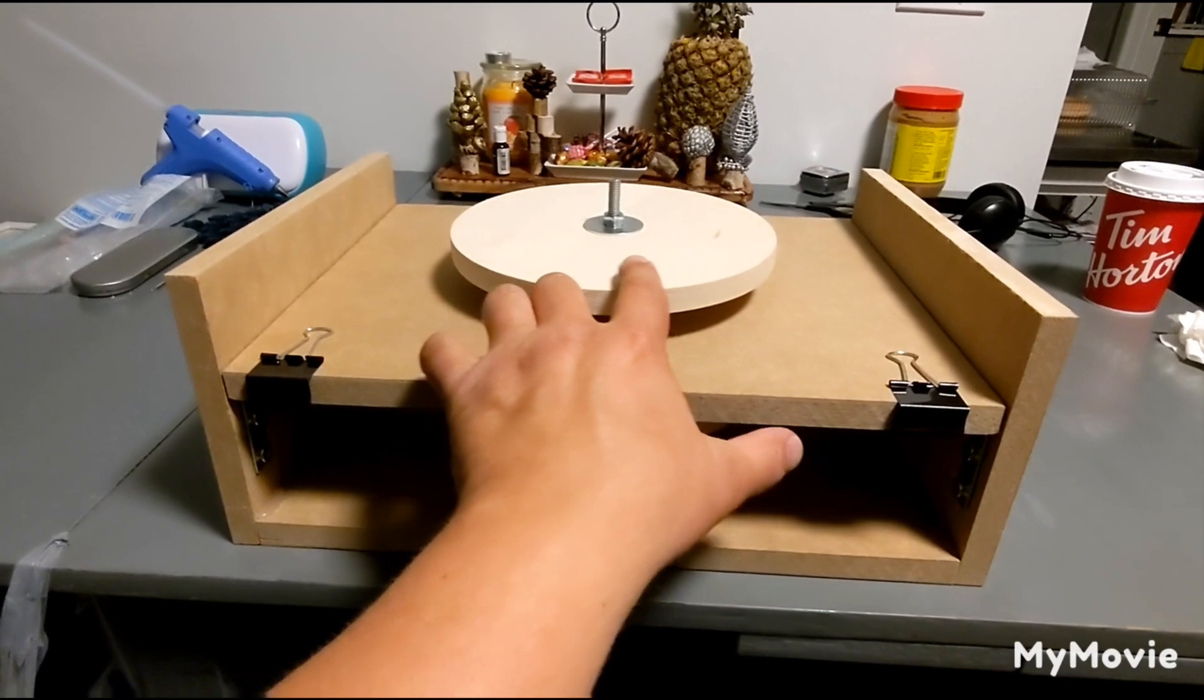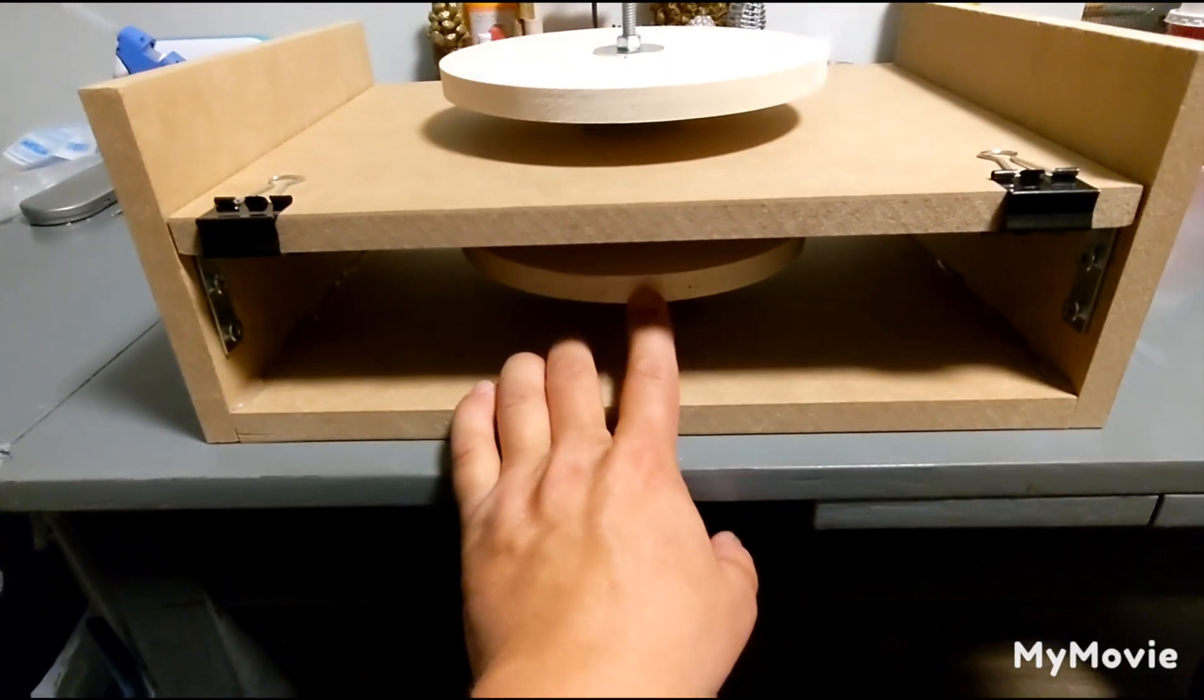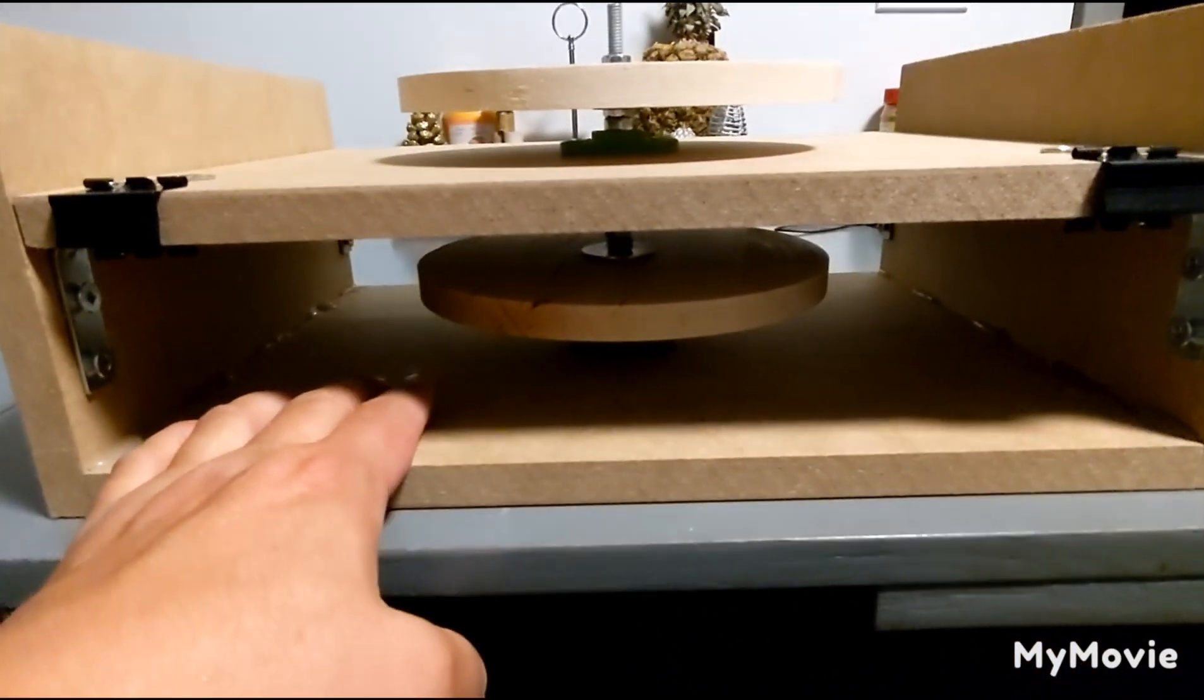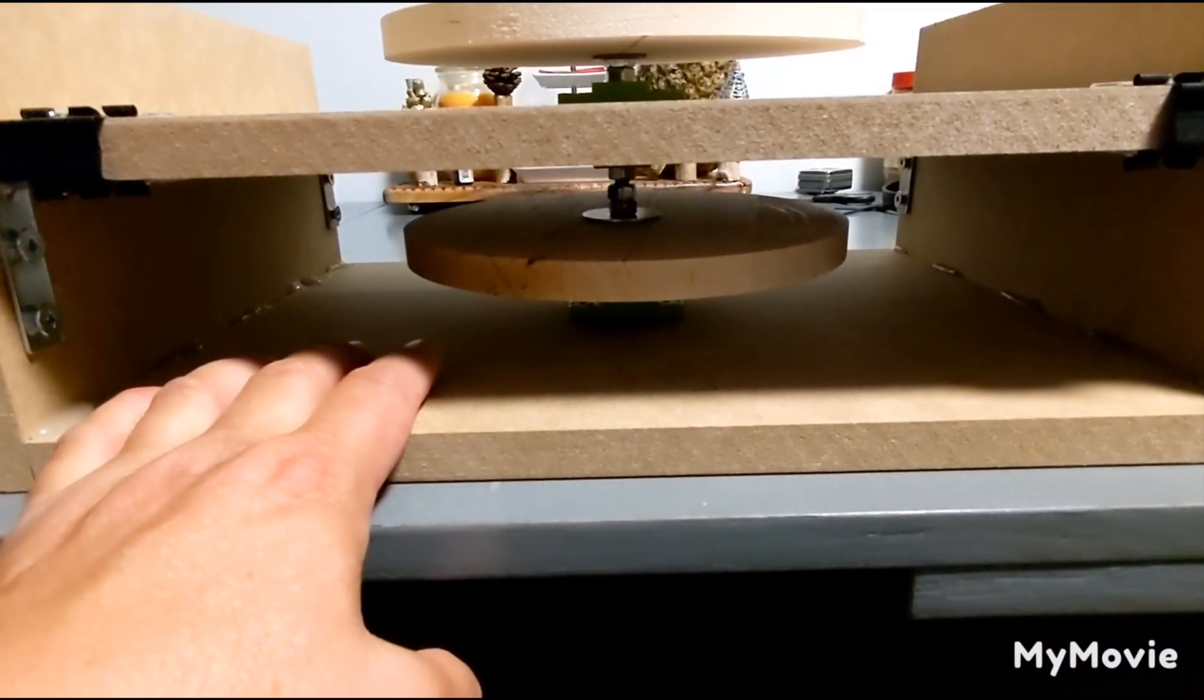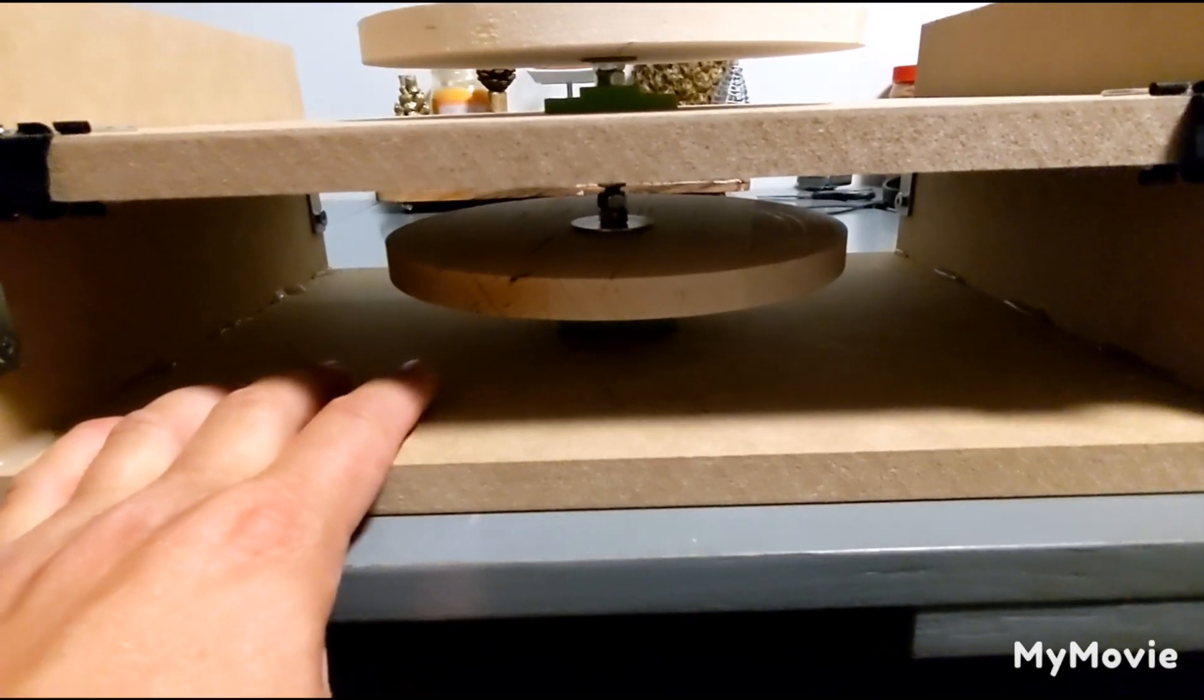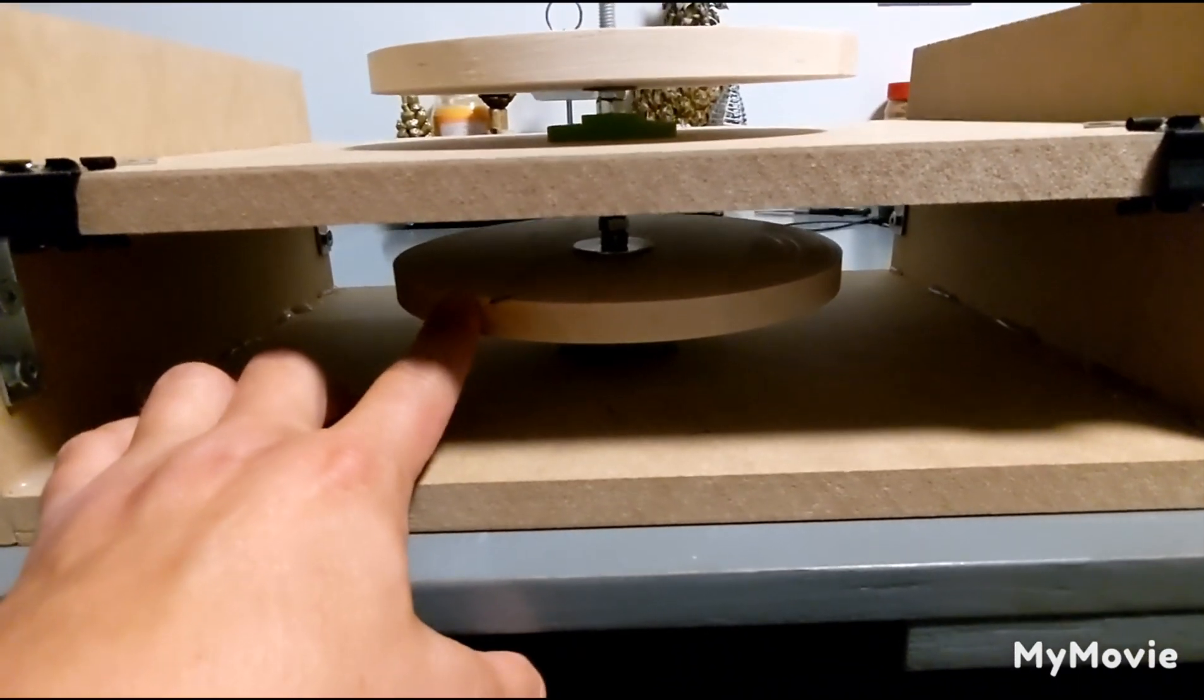So there'll be magnets going all the way around north south, north south. And on this one here it'll be all north facing out. It'll be the zero lens, the zero force motor that John Bedini built before he died, and that's what's going to be running this wheel down here.